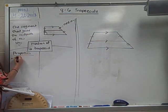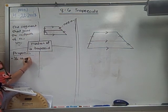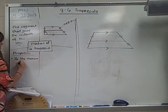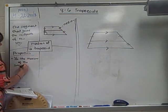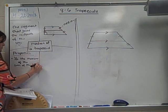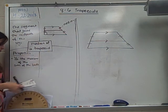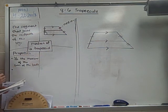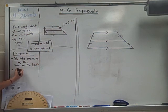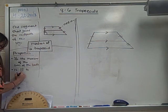The median is going to be one half the measure or the length of the sum of the bases. The median is always going to be half of the sum of the two bases. Also, the median is always parallel to the bases.